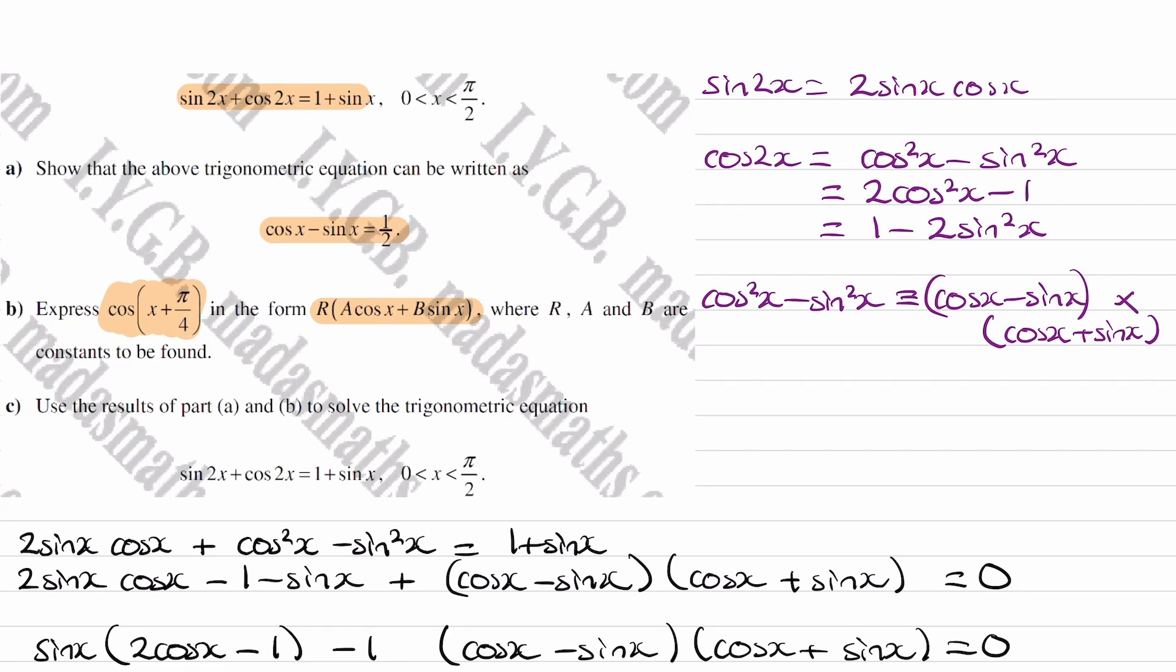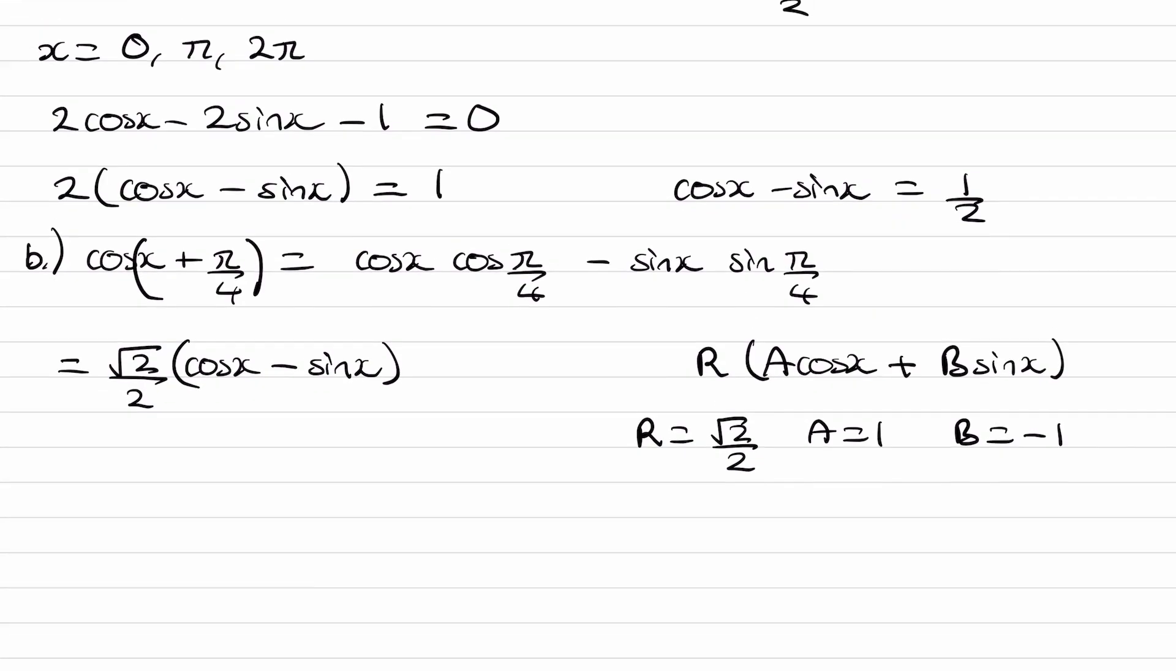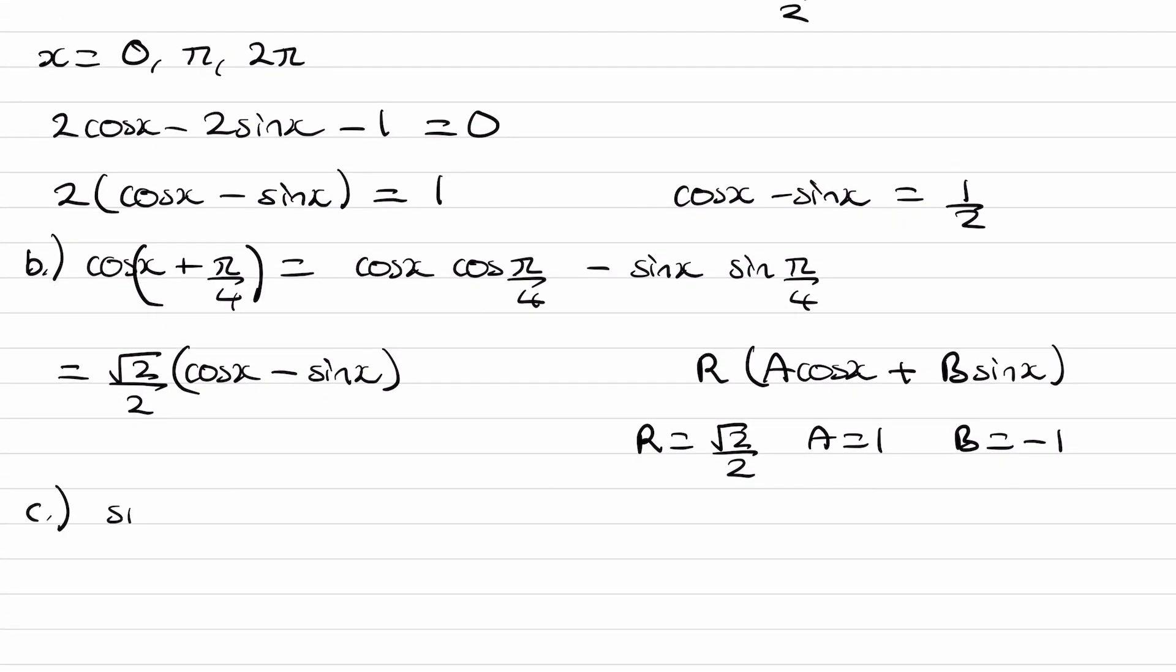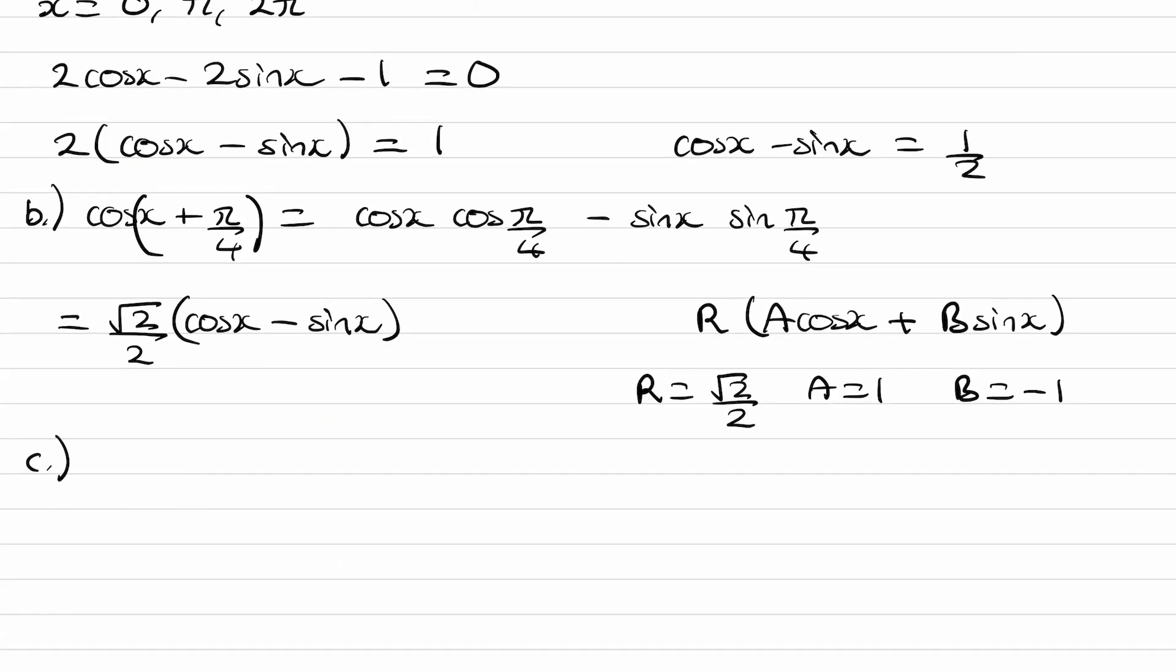And for part C, use the results of part A and part B to solve the trigonometric equation. That's the same as what we have above. This is the exact same equation as what we have here. And remember from part A, we rewrote this equation as this. So basically we're trying to solve this equation here. Actually wait, first let me write that down. So for part C, we're trying to solve cos x minus sin x equals a half. We're trying to solve that in between 0 and π over 2.